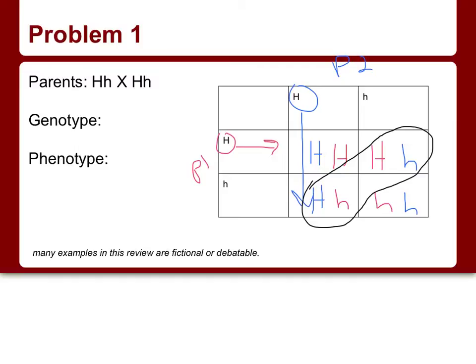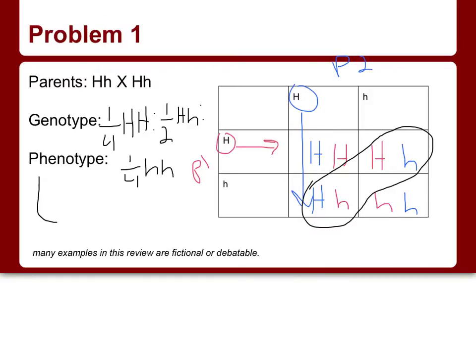Now that we've completed our Punnett square, we can calculate the genotype ratios. The genotype is just the letter combinations, and we count how many of each we have. There is one out of four that is homozygous dominant (HH), two out of four that are heterozygous (Hh), and one out of four that is homozygous recessive (hh). That is our genotype ratio.